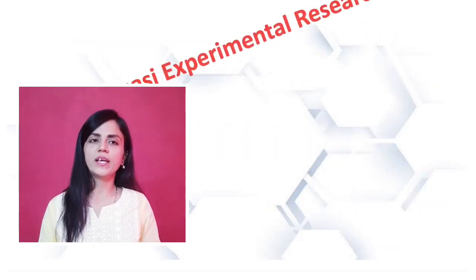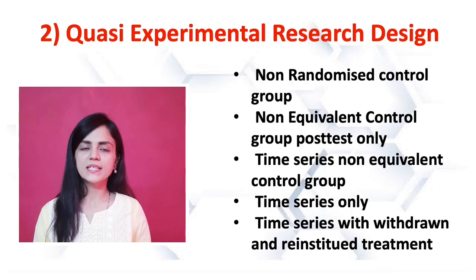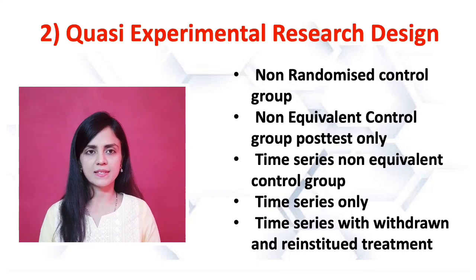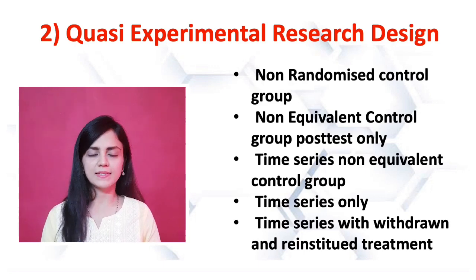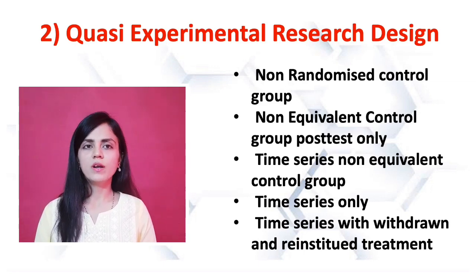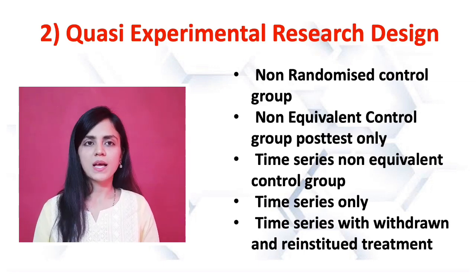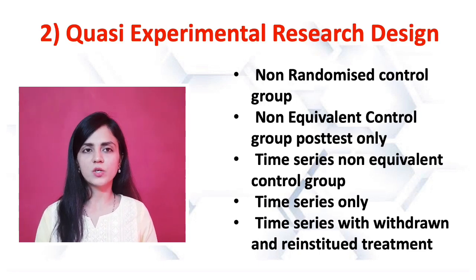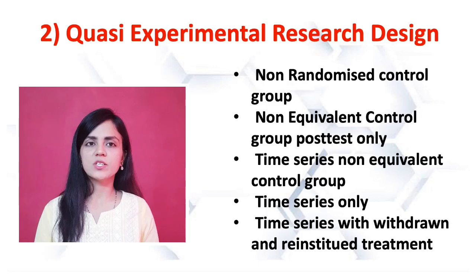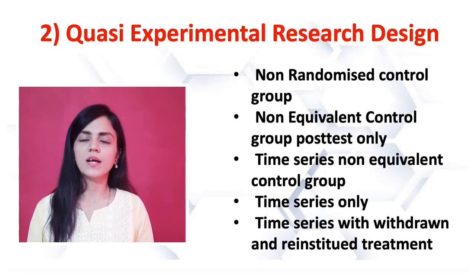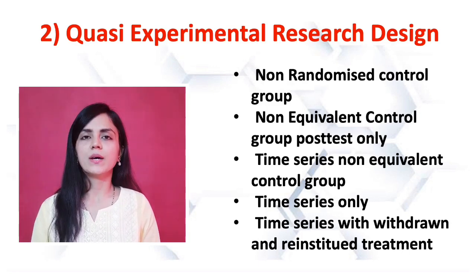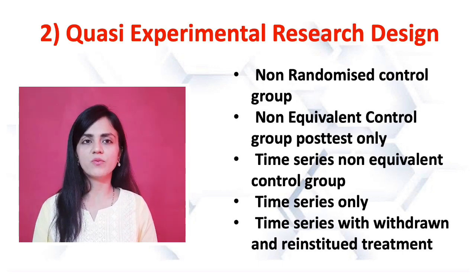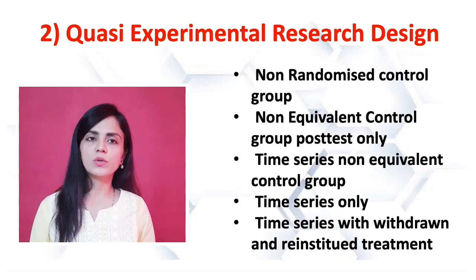Next is quasi-experimental research designs. In that we can see five different types: number one, non-randomized control group; number two, non-equivalent control group post-test only; number three, time series non-equivalent control group; number four, time series only; and number five, time series with withdrawn and reinstituted treatment.